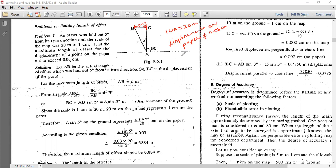So 0.03. To sin 5 degrees, we can see perpendicular by hypotenuse, that is BC by AB.